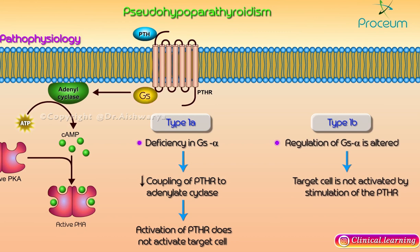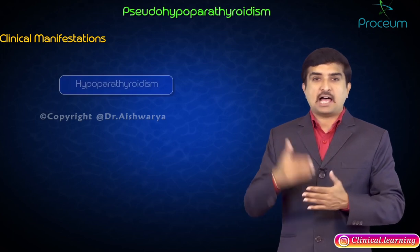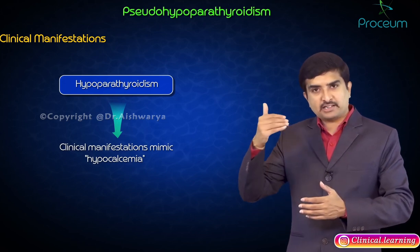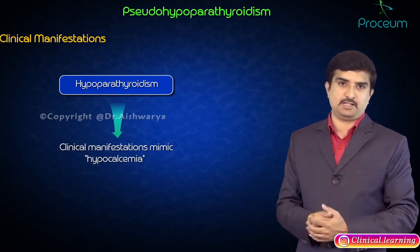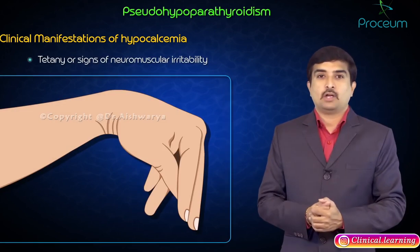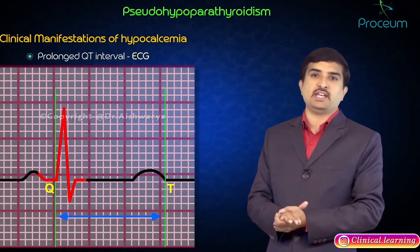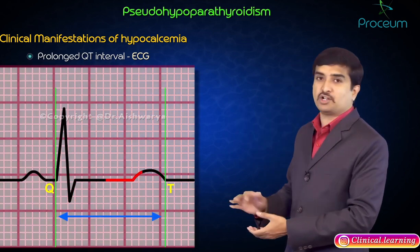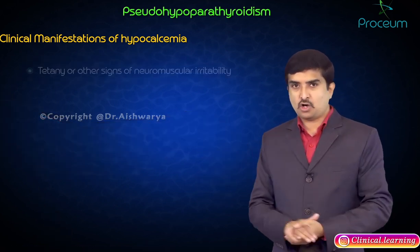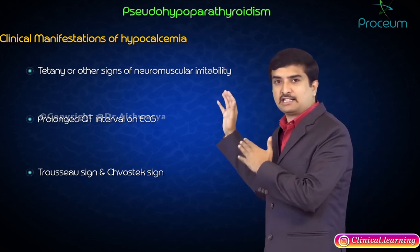Regarding clinical manifestations, they mimic a hypoparathyroid state, primarily hypocalcemia. The clinical features of hypocalcemia include tetany and other signs of neuromuscular irritability. There will also be a prolonged QT interval on the ECG, which is an important sign to know, as well as Trousseau sign and Chvostek sign.